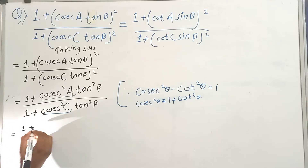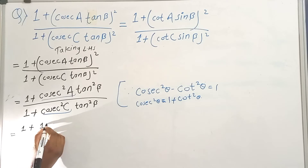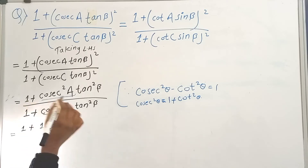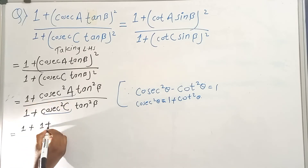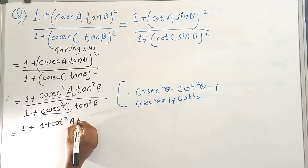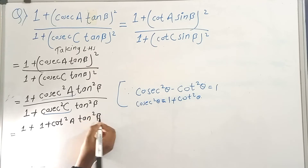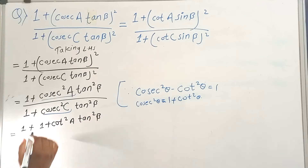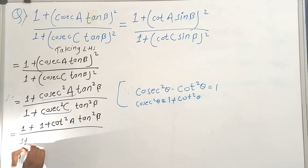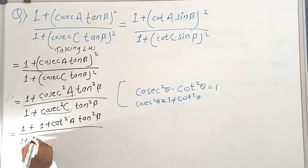One plus... one plus. You go on: cot squared a equals to 1 plus... cot square a and tan square b. That's the same.